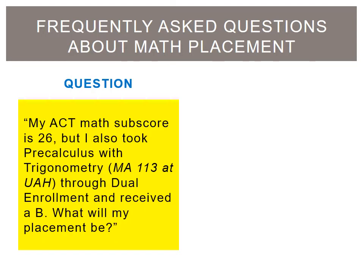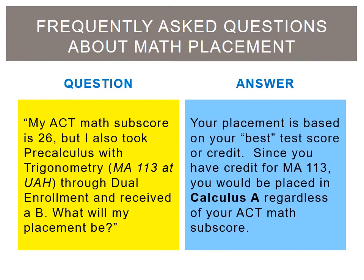My ACT math subscore is 26, but I also took pre-calculus with trigonometry MA 113 at UAH through dual enrollment and received a B. What will my placement be? Your placement is based on your best test score or credit. Since you have credit for MA 113, you would be placed in Calculus A regardless of your ACT math subscore.